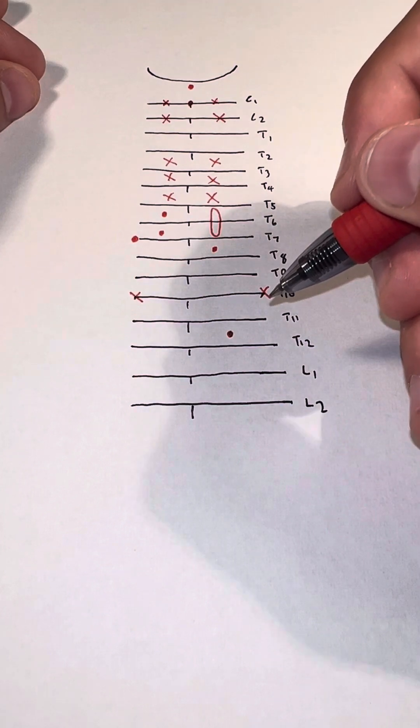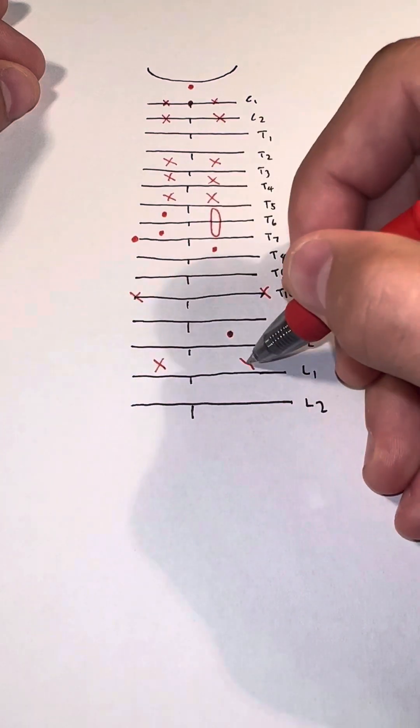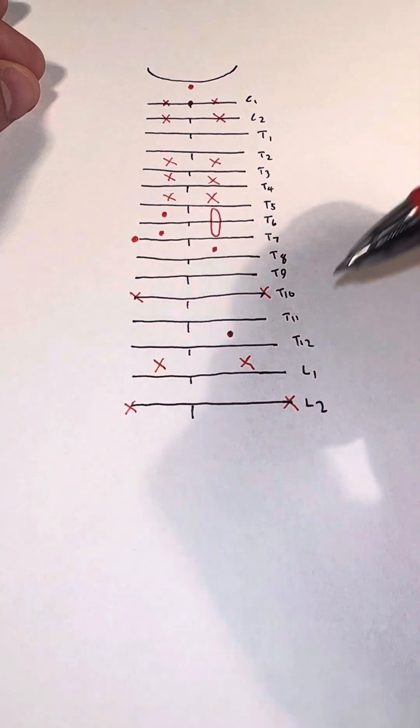Finally, move to the space between T12 and L1, and draw an X here, X here, and then L2, X here, X here.